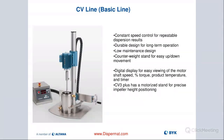Then we have the CV line, which is actually our most popular lab-scale model. It has the same capabilities as the LC, except you now have the automatic motor lift up and down, so you can precisely position the blade in the container. It has a timer function, a display of current speed, and will also give you a torque reading and product temperature. Product temperature is really important if you want to convert the CV model to a basket mill or attach an APS vertical bead mill.